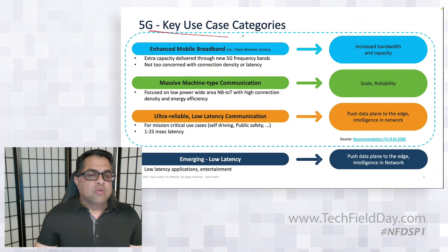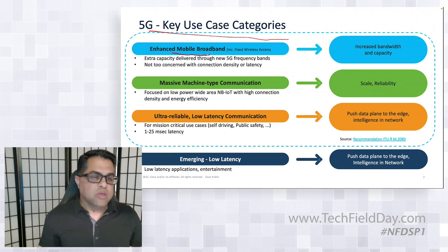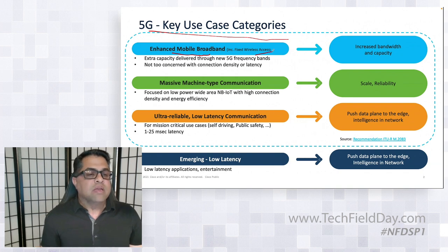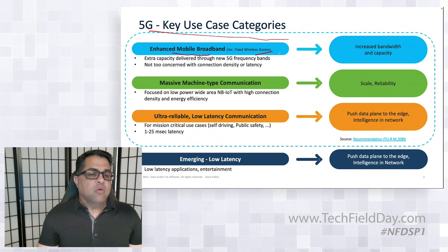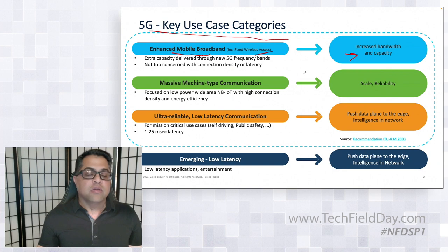The key use cases for 5G are three. One is enhanced mobile broadband — eMBB according to 3GPP — which includes fixed wireless access. Basically it means high bandwidth to the user; we talk about one gigabit per second to the user. From a transport perspective, this means increased bandwidth and capacity.